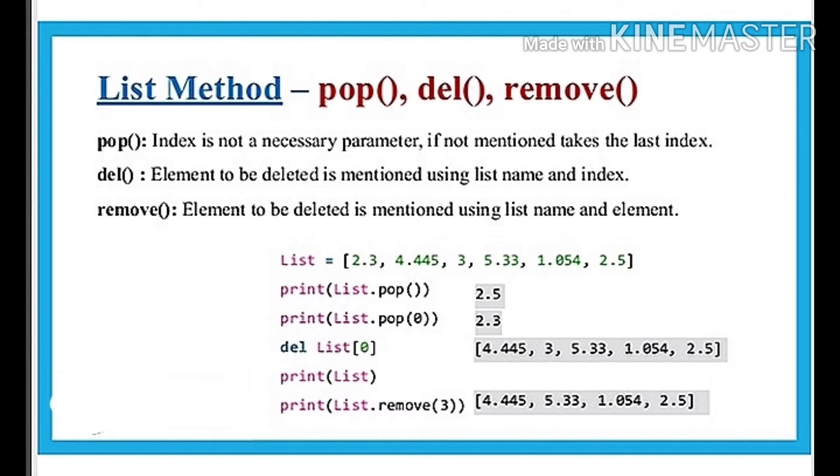Pop, del, and remove. Pop: index is not a necessary parameter. If not mentioned, it takes the last index. Del: element to be deleted is mentioned using the list name and index. To use remove, the element to be deleted is mentioned using the list name and element.